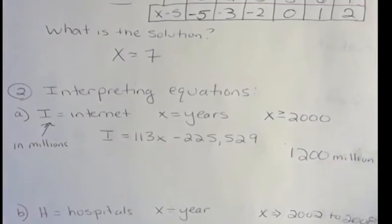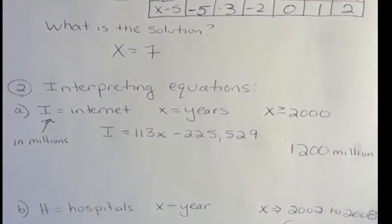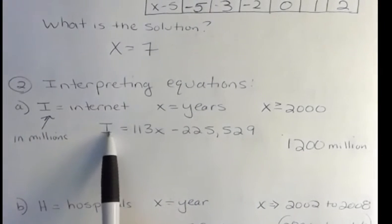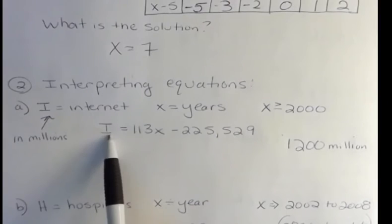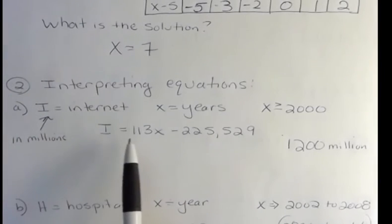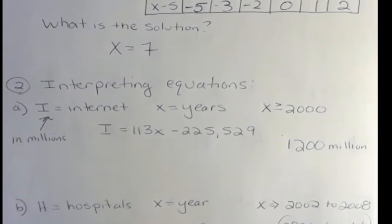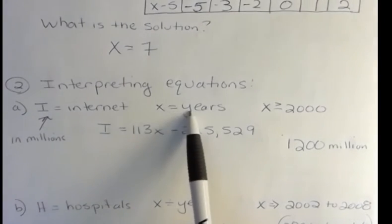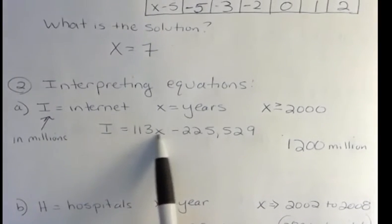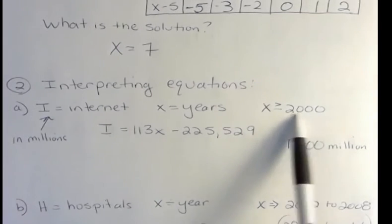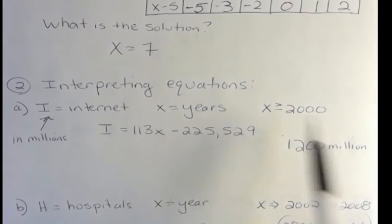The other two I wanted to talk to you about are interpreting equations. So they have this problem, and they give you an equation. This is the equation on my thing, and this is saying I is the internet in millions, and this is the equation of internet users. And they say that x is the years, okay, so this is the year.